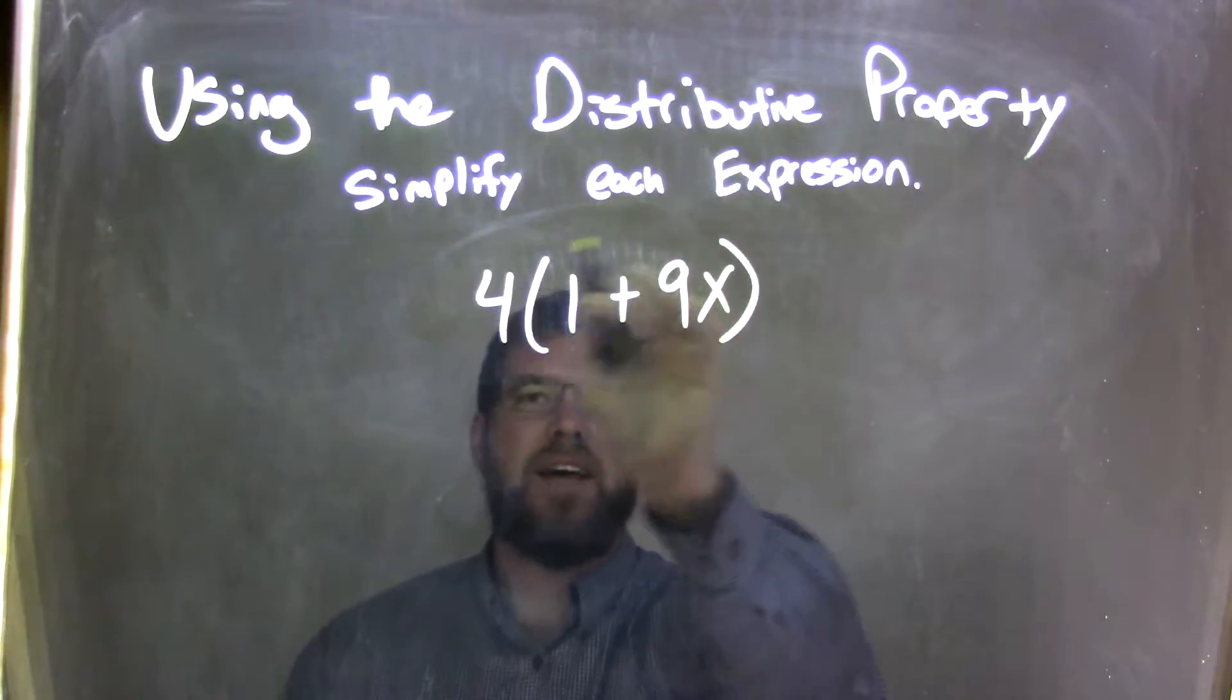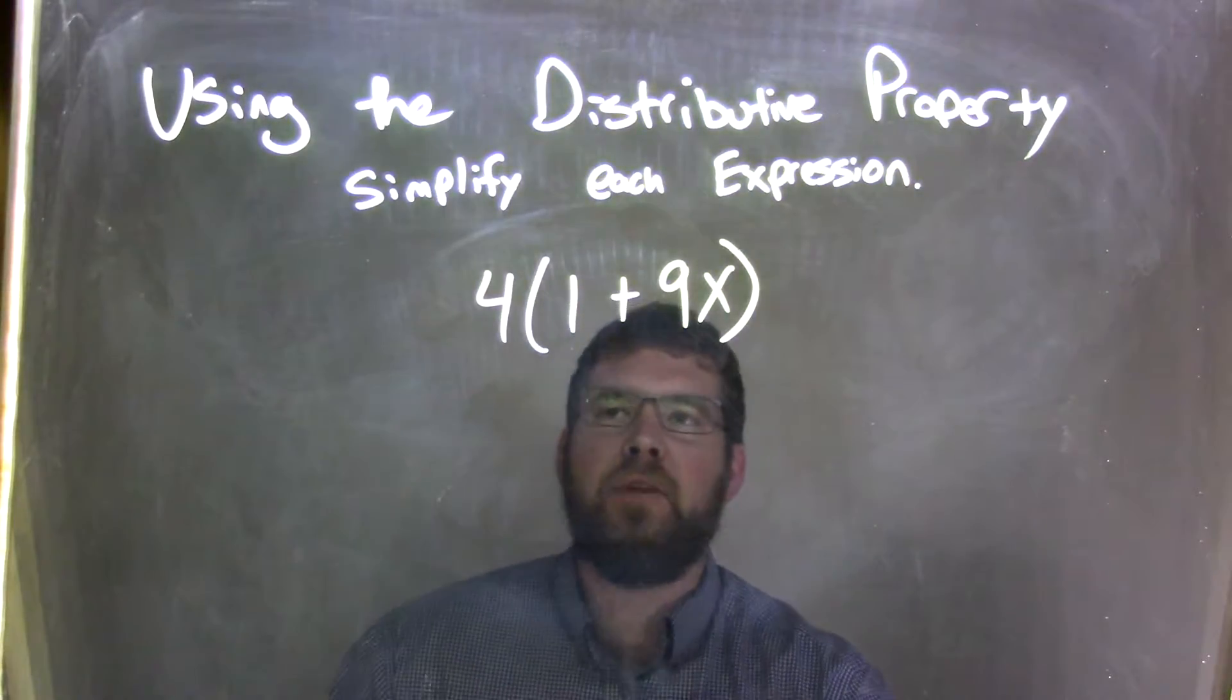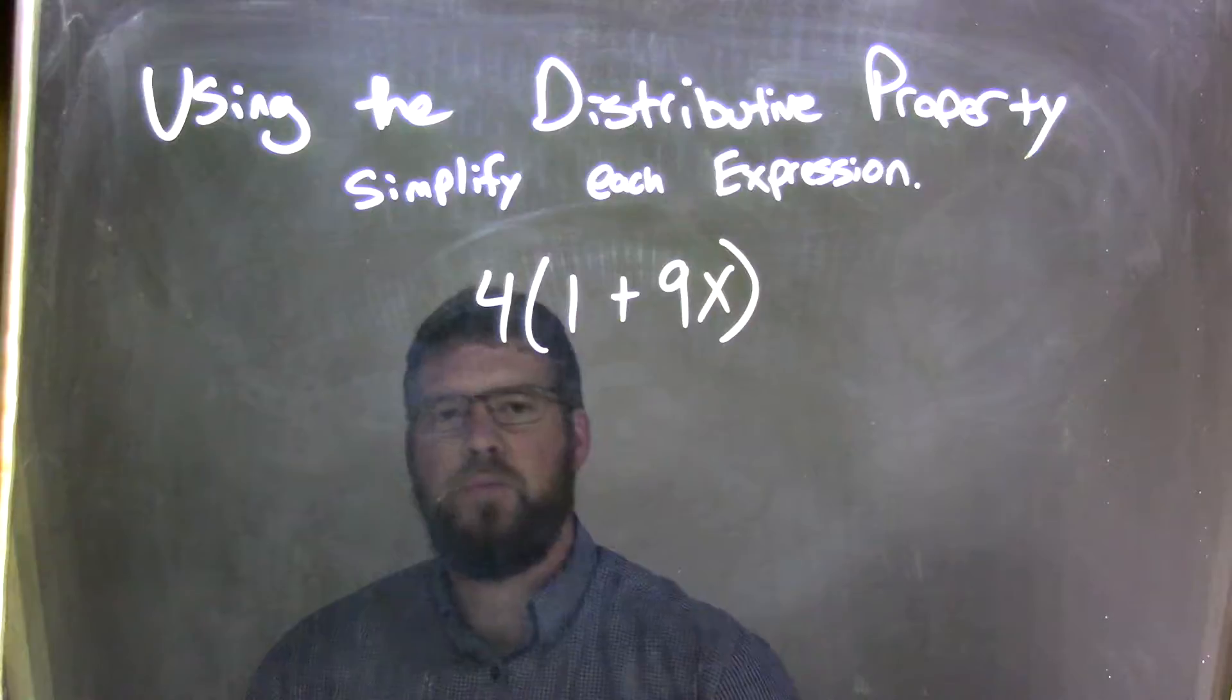The order of operations says we have to deal with what's in the parentheses first. So we have 4 times whatever is inside these parentheses.